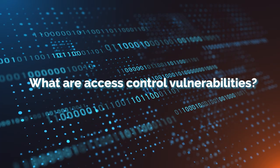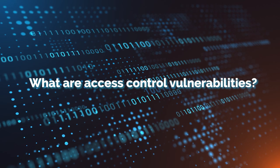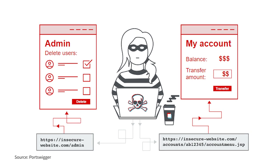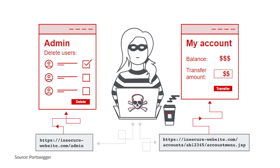So what are exactly access control vulnerabilities? Access control vulnerabilities are weaknesses in a system's security that allow unauthorized users to gain access to restricted resources. These vulnerabilities can exist in software, hardware, or even in the way that the system is configured. For example, a vulnerability in a web application that allows an attacker to bypass the login page and gain access to sensitive data would be considered an access control vulnerability.